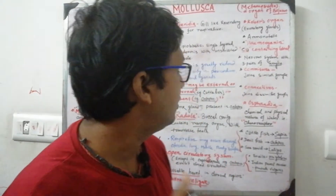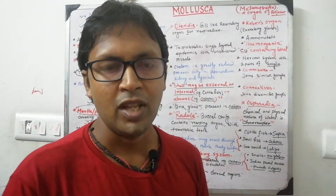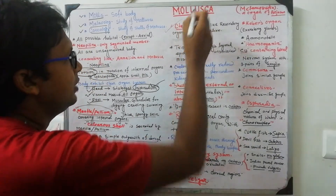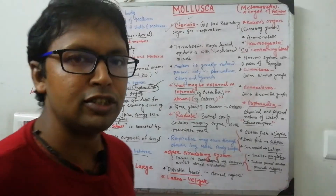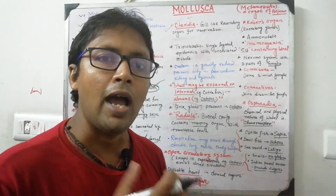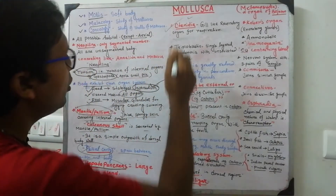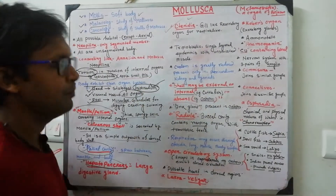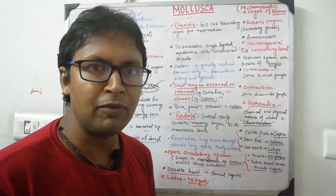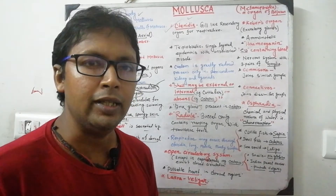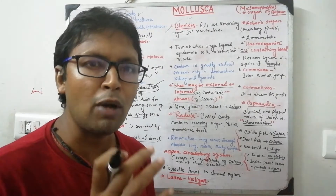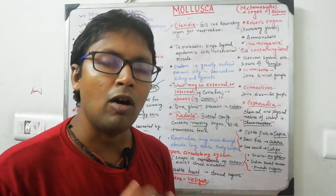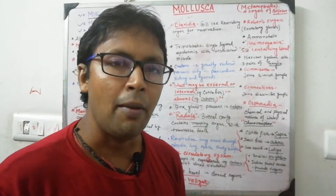Let's start Phylum Mollusca today. Mollusca is the second largest invertebrate phylum — the largest being Arthropoda. The term 'Mollusca' is derived from the Latin word meaning 'soft body,' referring to the soft visceral mass of its members. The scientific study of molluscs is called malacology.